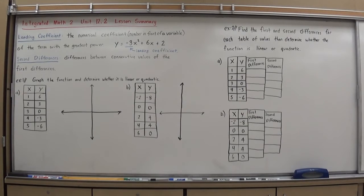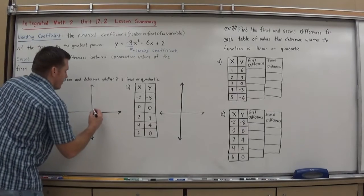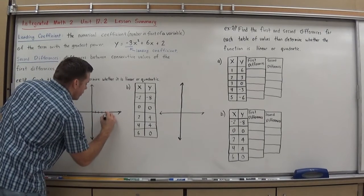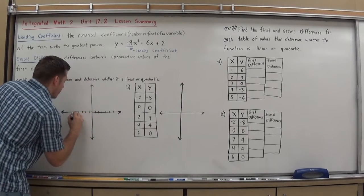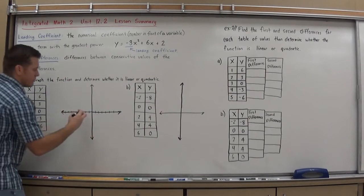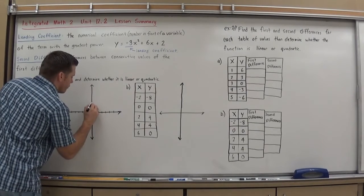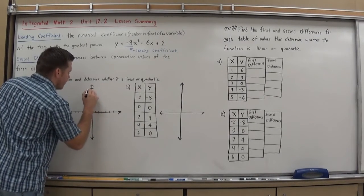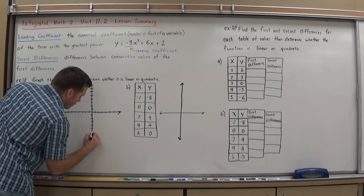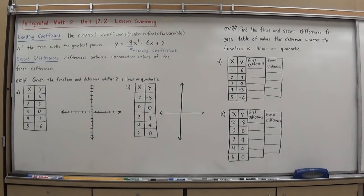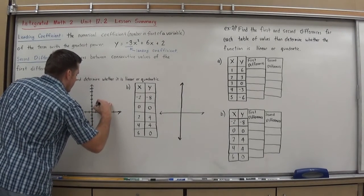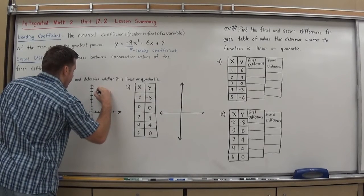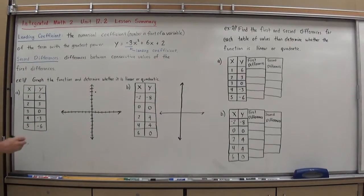For this first part, I just have to graph this function and plot these points. My first point is (1, 6), so I'm going to make a scale — I need to be able to go up to 6 and negative 6 on my grid. Remember, x moves things left to right, y moves up and down. So (1, 6) means right 1, up 6, and I have my first point. Then I plot my second point: right 2, up 3 for (2, 3).